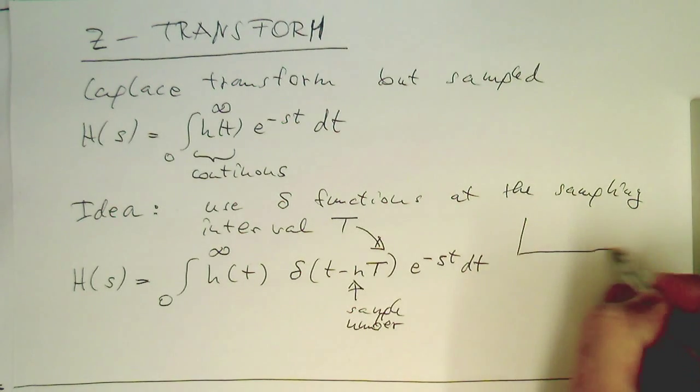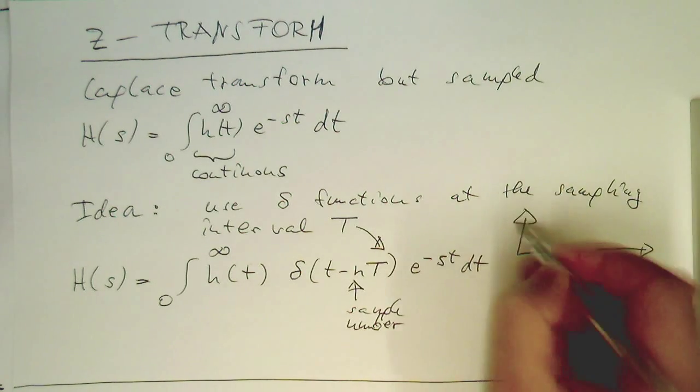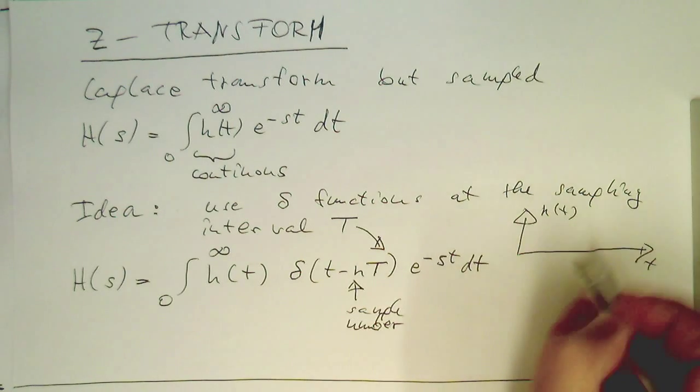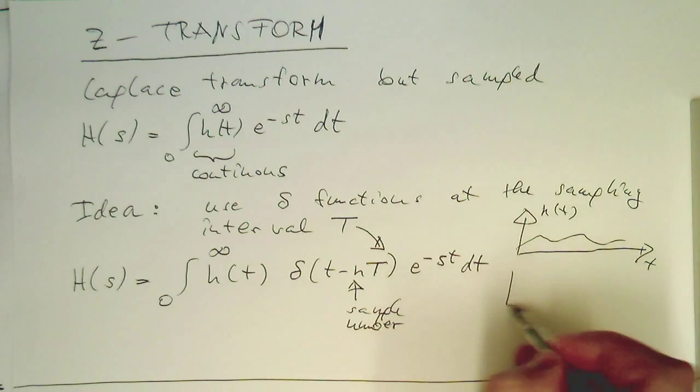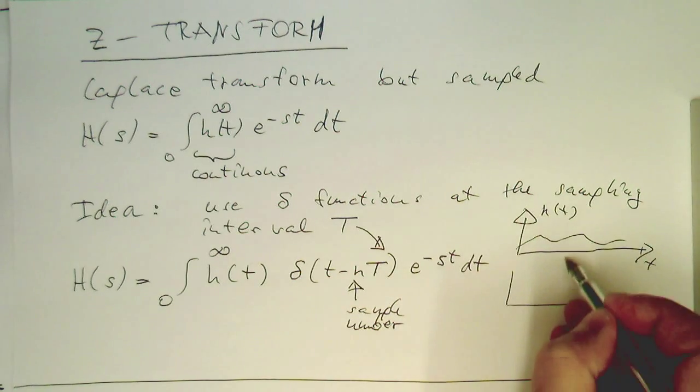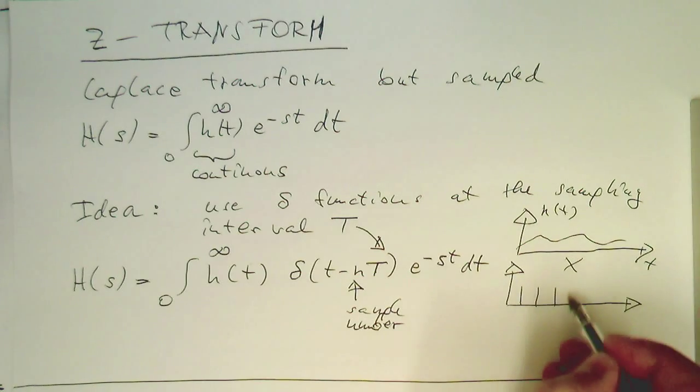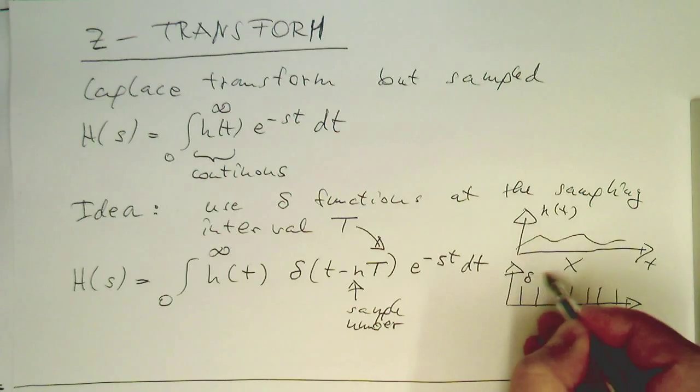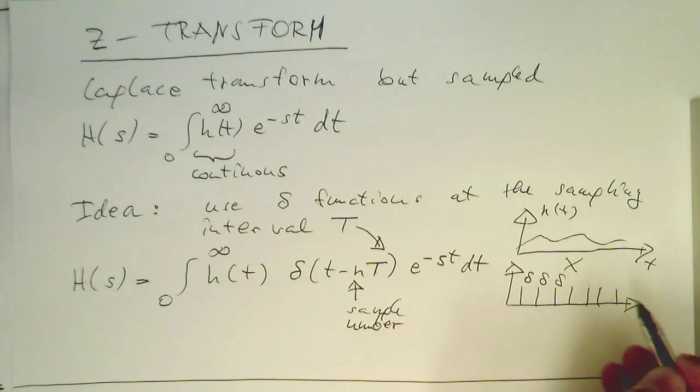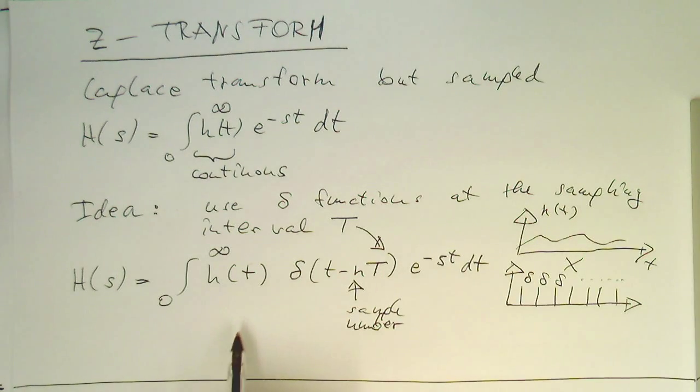Essentially what we're doing is if this is our signal h(t), and this looks like this, then we just multiply this with our regular delta functions. That's delta, delta, delta, and so on. And so, this multiplication, we are getting rid of the integral here.